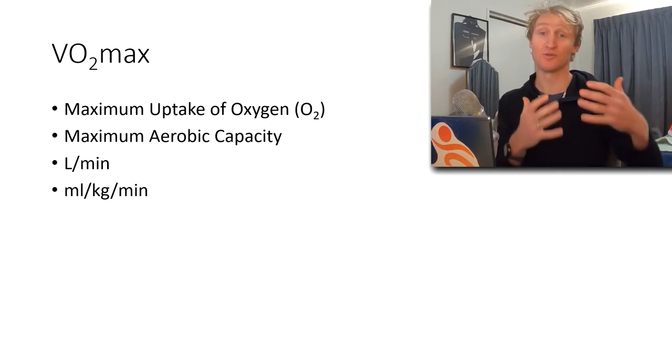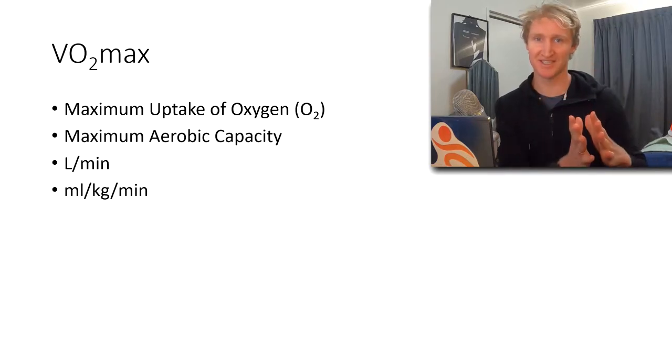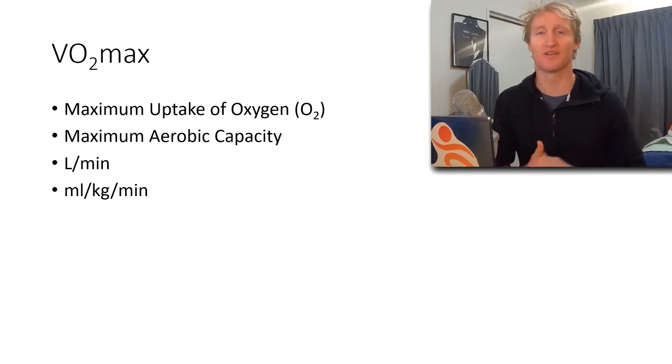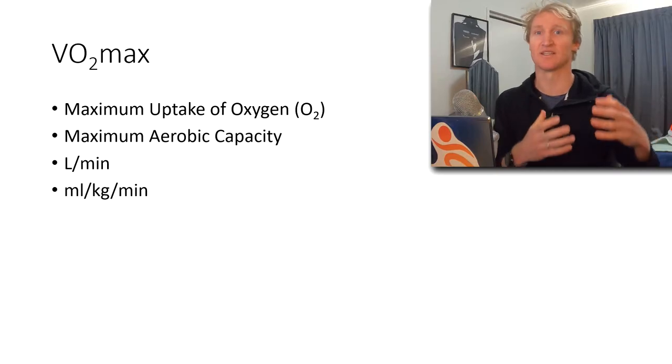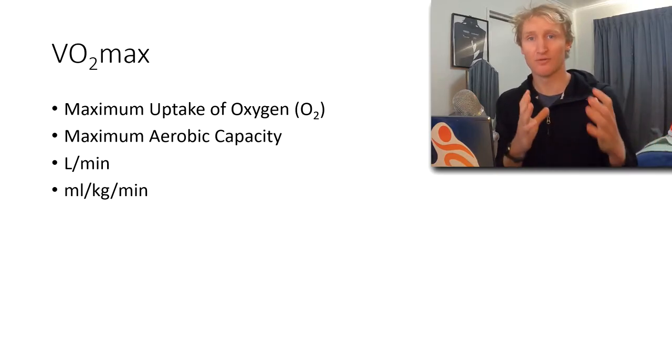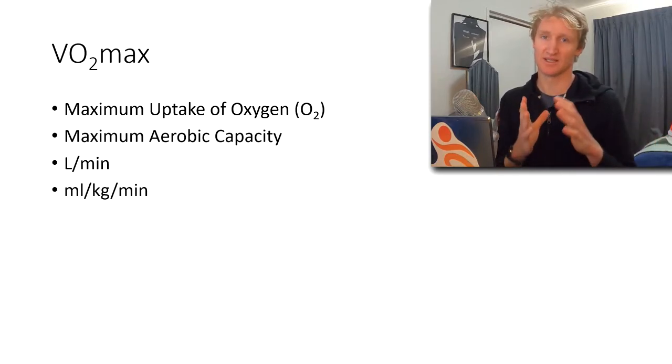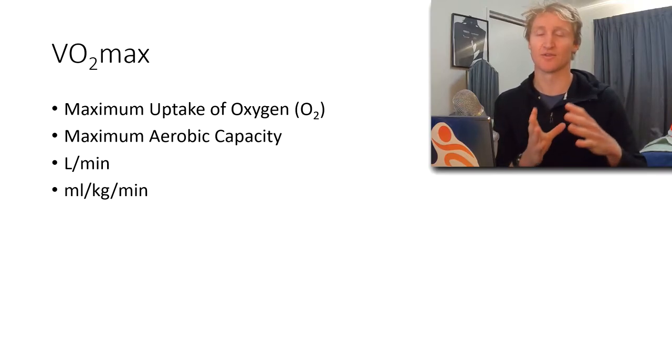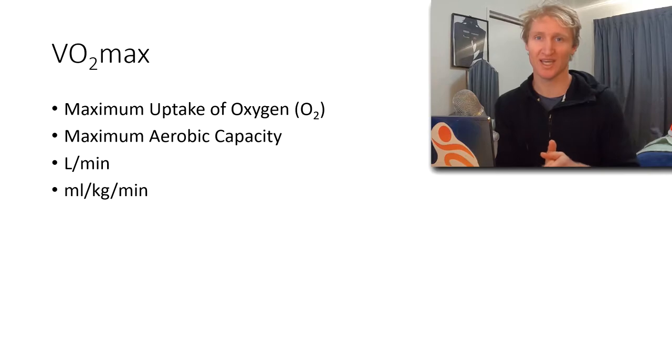You can use that to compare as a percentage to your VO2 max. Your VO2 max can help predict your 10 kilometer or any running, cycling power output, race time. Now VO2 is measured in liters per minute, that's liters of oxygen per minute, or mils of oxygen per kg per minute, so that's relative to body weight.